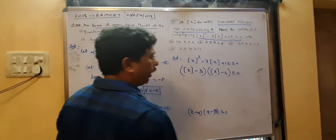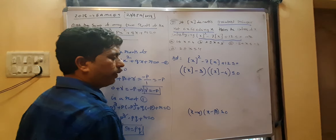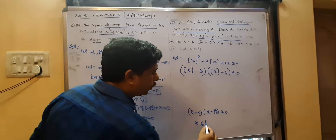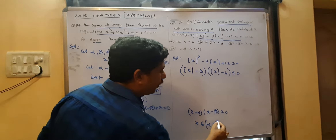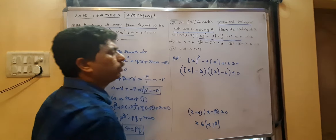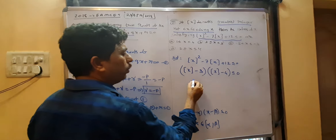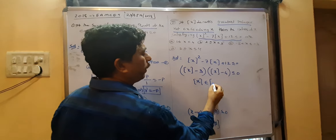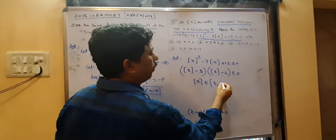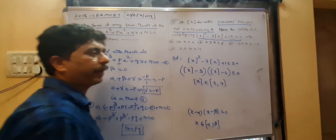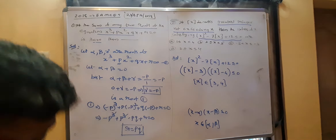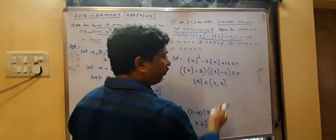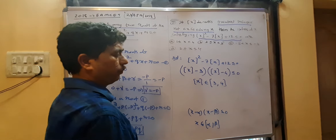We know that (x − α)(x − β) ≤ 0 means x belongs to the closed bracket [α, β]. So [x] belongs to the closed interval [3, 4], including 3 and including 4 and between values.